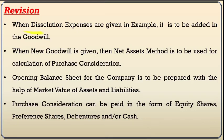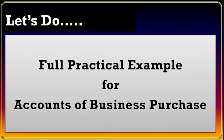When dissolution expenses are given in the example, they are to be added to goodwill. When new goodwill is given, the net asset method is to be used for calculation of purchase consideration. The opening balance sheet for the company is to be prepared with new values of assets and liabilities, which includes share capital, debentures, preference shares, equity shares, and cash. Purchase consideration can be paid in the form of equity shares, preference shares, debentures, and cash. Important points: dissolution expense and new goodwill. Let's do one full-length practical example for the sale of business, or accounts of business purchase — purchase of partnership firm by company.